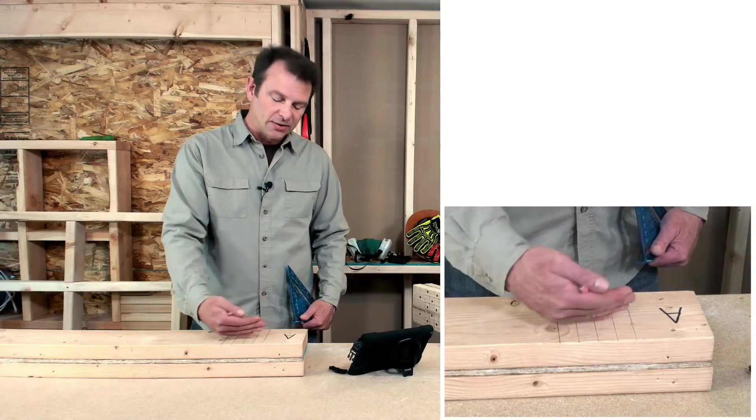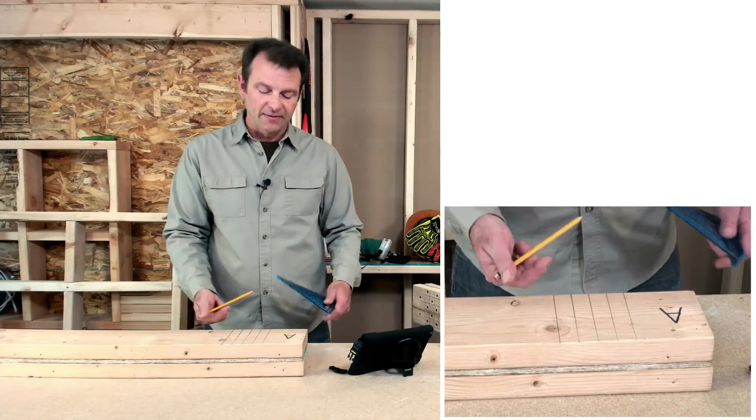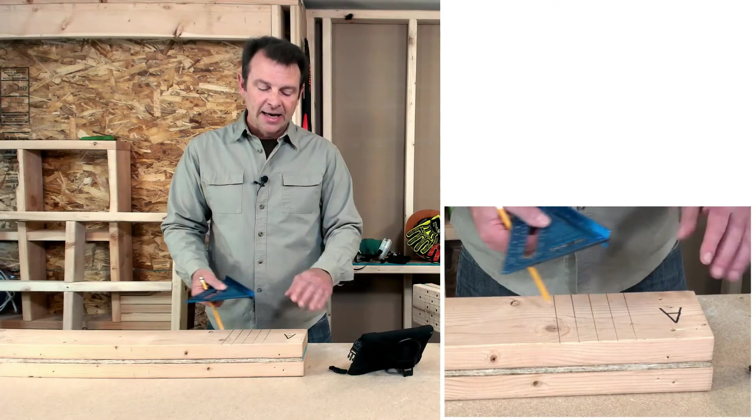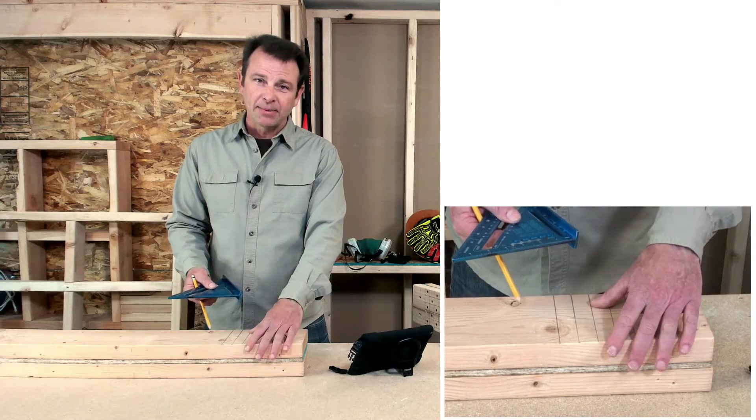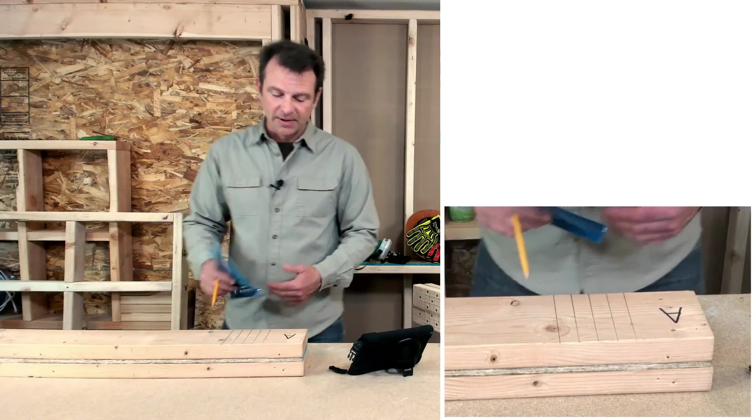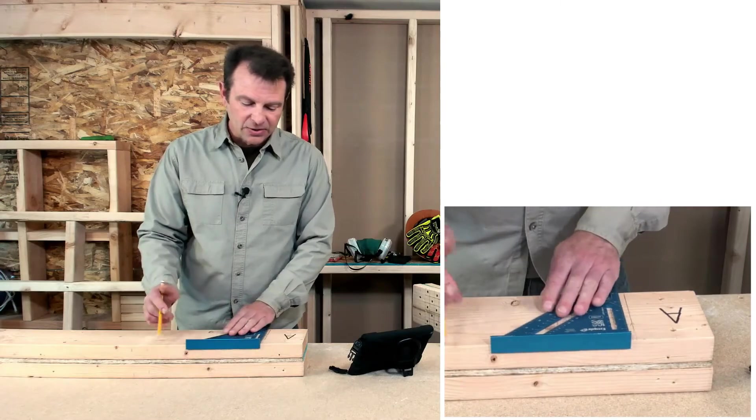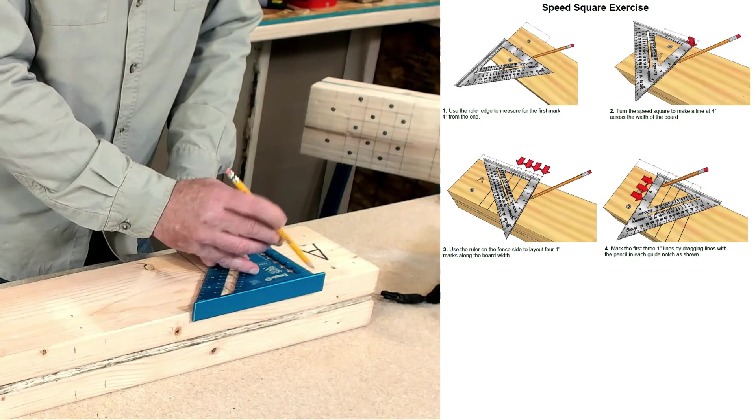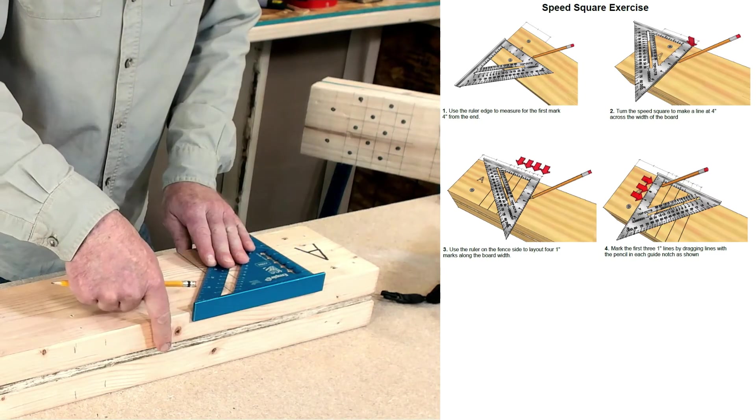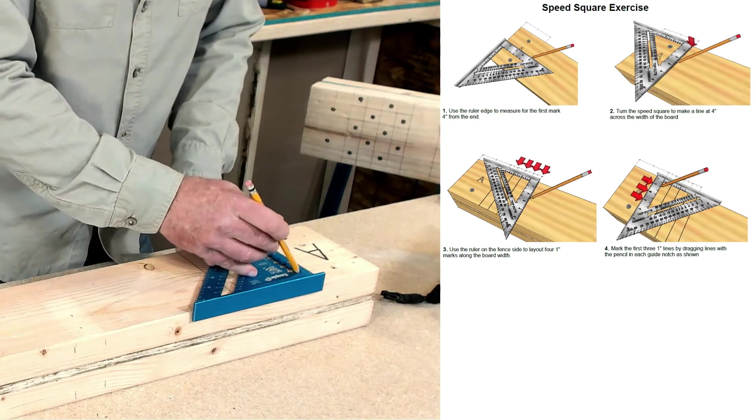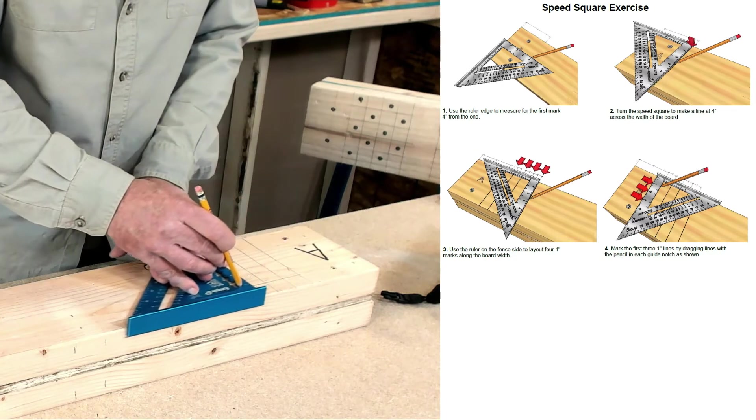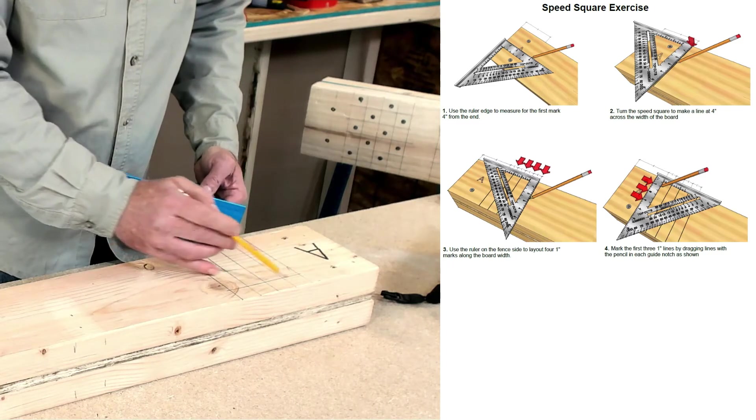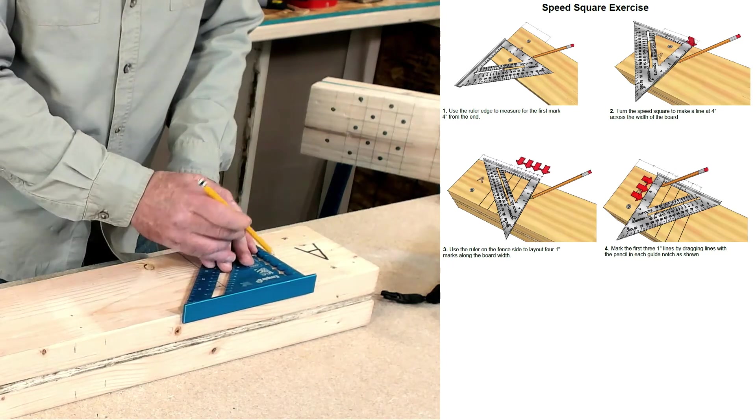Now we're going to make five squares that are going to carry across the width of the board. We're going to use the scribe notches on this speed square to do that. And I'm always going to start from the top of this board and then work my way towards myself. So I'll turn the speed square this way and find the one inch notch that sets my line one inch from the fence edge, which is laying on this board. And I'll put my pencil in there and drag it across. And as you can see there, I get a one inch square all the way across because that line carries.